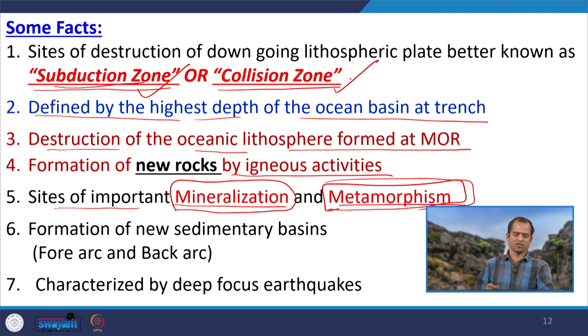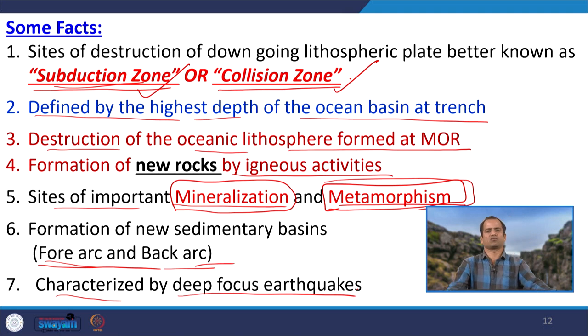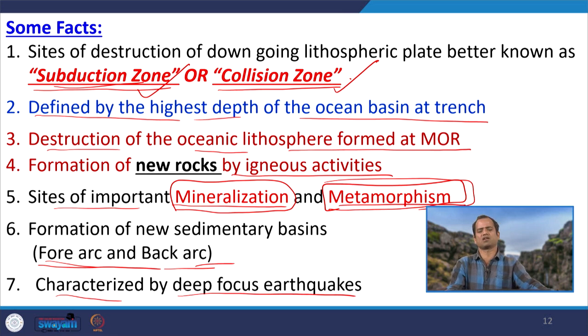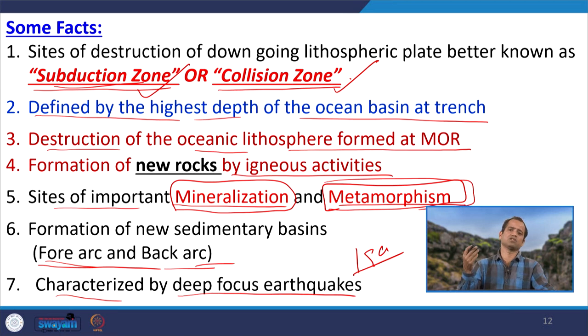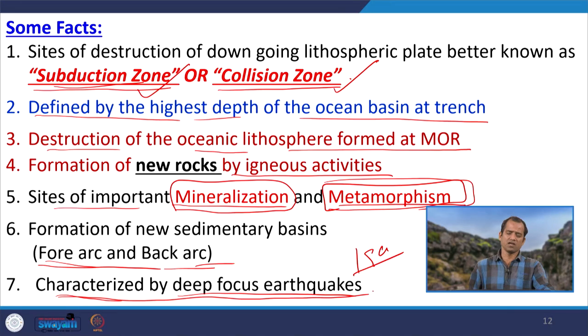Subduction and collision zones are characterized by deep focus earthquakes — high seismic zones. For example, the Himalayan system recently had a seismic event with a hypocenter depth of around 190 kilometers. Compared to the divergent plate margin, which has shallow focus earthquakes, and the conservative plate margin, which has earthquakes up to about 20 kilometers depth, the convergent margin is characterized by deep focus earthquakes.